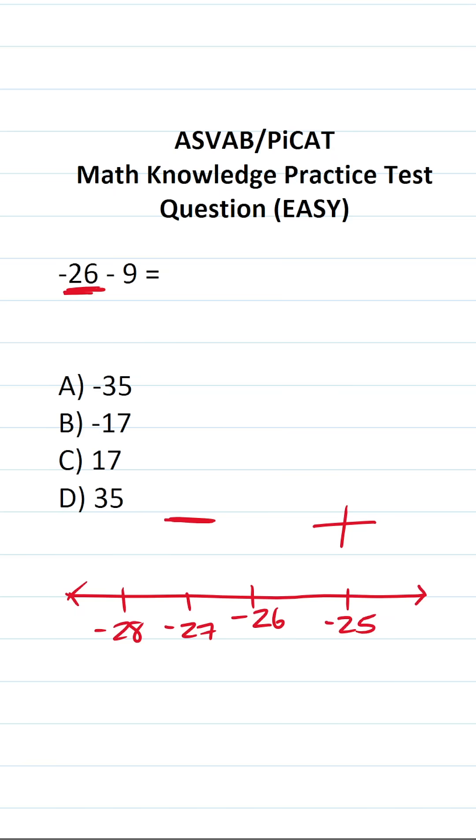So negative 26 minus 9, we're going to start at negative 26. We're subtracting 9, so we're going to go this way, 9 places.